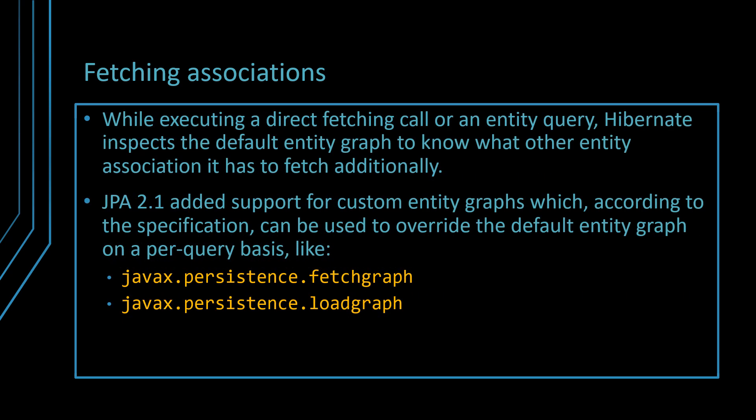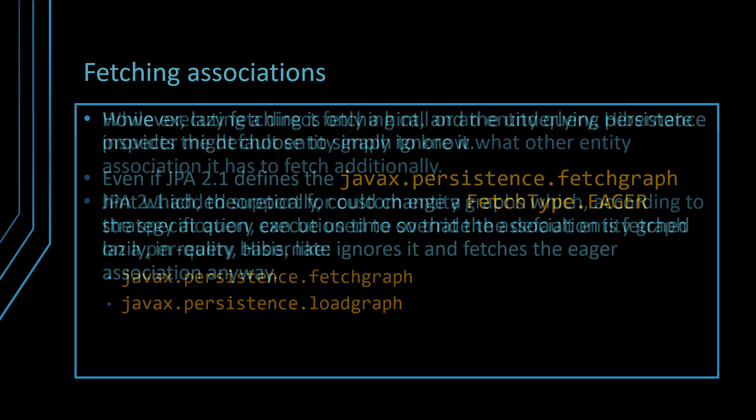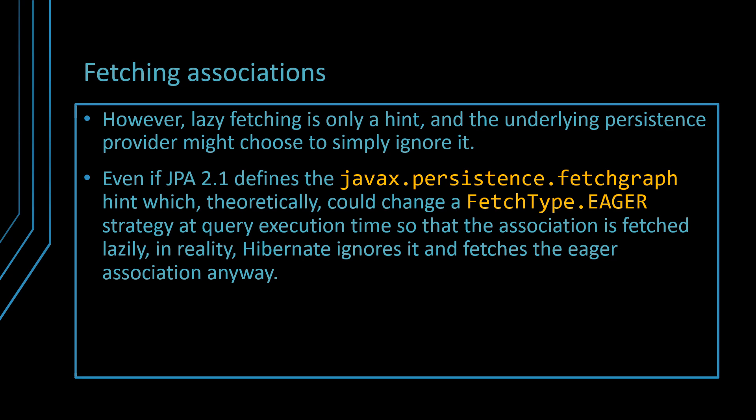When executing a direct fetching call or an entity query, Hibernate inspects the default entity graph to know what other entity associations must be fetched additionally. JPA 2.1 and its support for custom entity graphs, which, according to the specification, can be used to override the default entity graph on a per-query basis. However, lazy fetching is only a hint, and the underlying persistence provider might choose to simply ignore it. Even if JPA 2.1 defines the javax.persistence fetch graph hint, which theoretically could change a fetch type eager strategy at query execution time so that the association is fetched lazily, in reality Hibernate ignores it and fetches the eager association anyway.